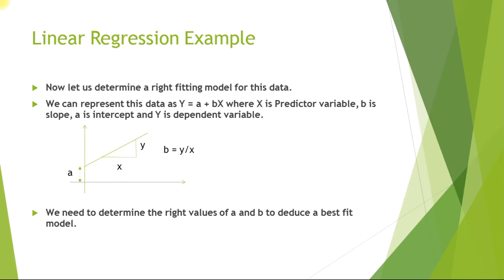Now let us start finding the right fitting model for this data set. We can represent a linear regression by using an equation as y equals a plus bx, where y is the dependent variable, x is the independent variable, a is the intercept of the line represented by this equation, and b is the slope of the line represented by this equation. x is a predictor or independent variable. Using the value of x, we can predict the value of the dependent variable y.